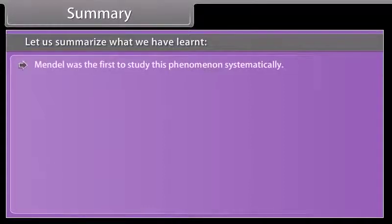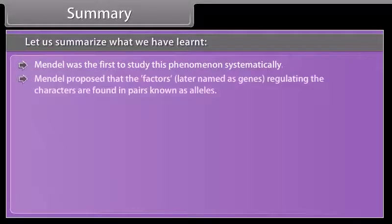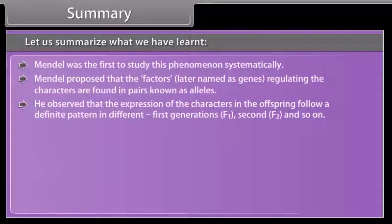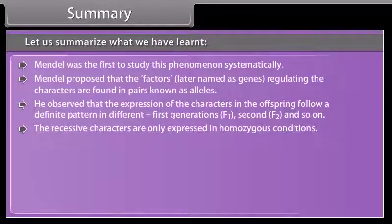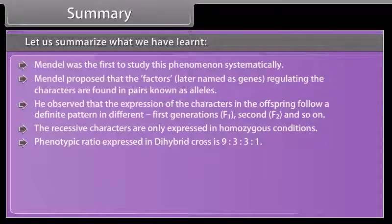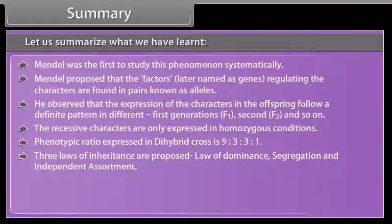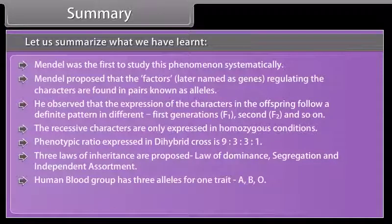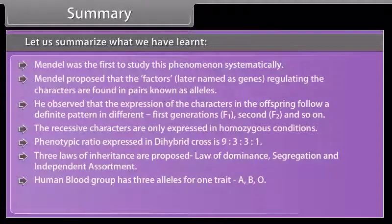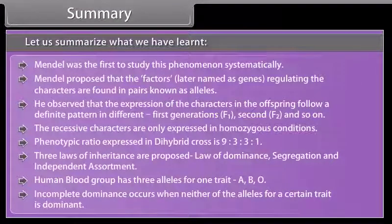Summary. Let us summarize what we have learned. Mendel was the first to study this phenomenon systematically. Mendel proposed that the factors later named as genes regulating the characters are found in pairs known as alleles. He observed that the expression of the characters in the offspring follow a definite pattern in different generations F1, F2 and so on. The recessive characters are only expressed in homozygous conditions. Phenotypic ratio expressed in dihybrid cross is 9 is to 3 is to 3 is to 1. Three laws of inheritance are proposed: Law of dominance, segregation and independent assortment. Human blood group has three alleles for one trait: A, B, and O. Incomplete dominance occurs when neither of the alleles for a certain trait is dominant.